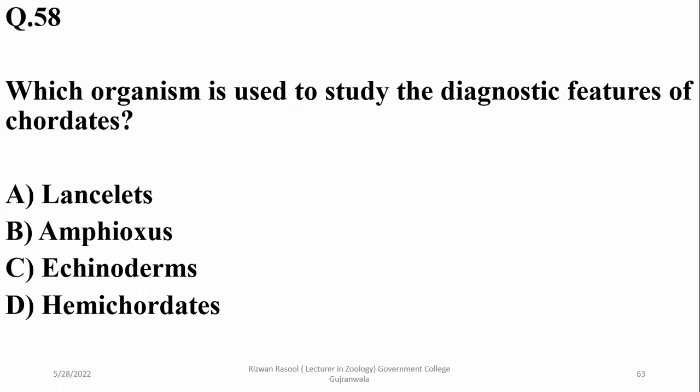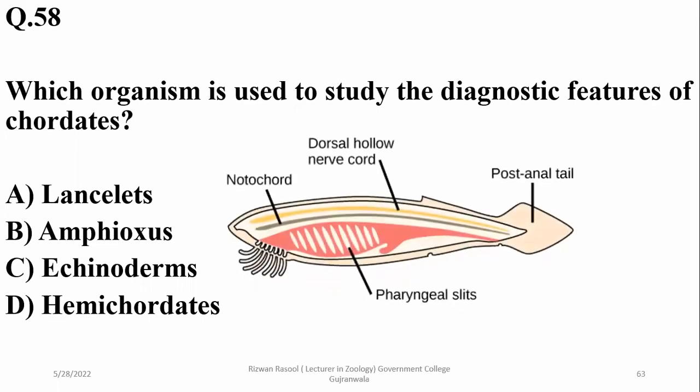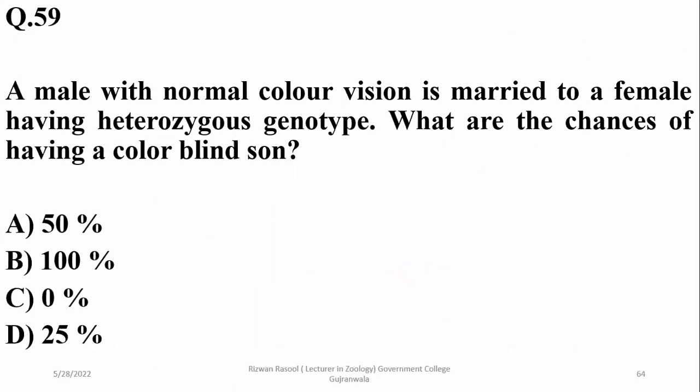The organism used to study diagnostic features of chordates — when given examples, lancelets are the organism. In the adult stage, lancelets show the five defining features of chordates.